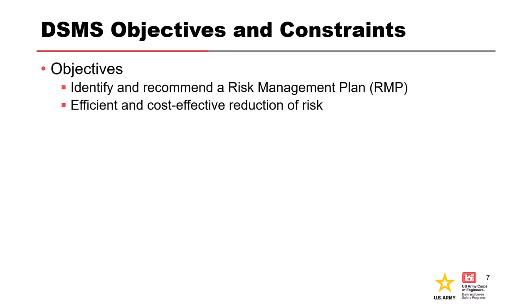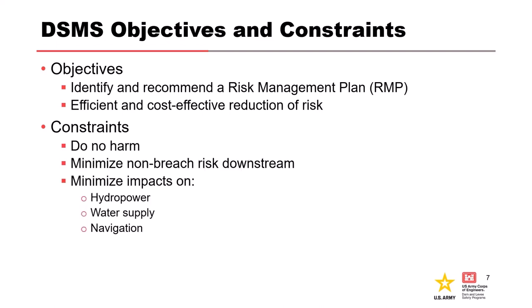Based on those ERs, Dam A had specific objectives and constraints. The objectives were identified in the risk management plan, which supports expeditious and cost-effective reduction of risk to achieve individual and societal total risk limits — getting it back below that guideline. Constraints include not transferring or creating risk that harms the public, minimizing non-breach risk downstream, which tends to be tricky when addressing an overtopping failure because you may need to increase releases. You also want to minimize impact on other authorizations like hydropower or water supply.